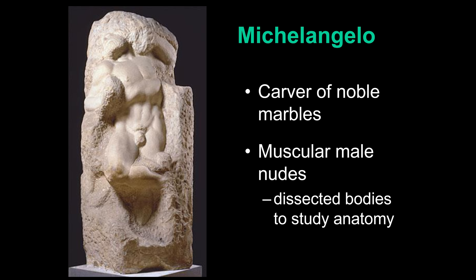Michelangelo was originally apprenticed to a painter, Ghirlandaio, but he decided his interest was in sculpture. As a young man he worked in the Medici household under Lorenzo the Magnificent. In Lorenzo's household there were also humanist scholars like Ficino, Pico della Mirandola, and the poet Poliziano, so Michelangelo could certainly have been exposed to Neoplatonic ideas. People disagree about how much of that shows up in his art.